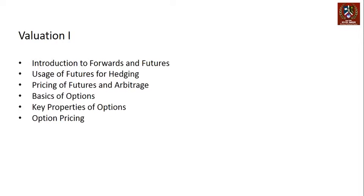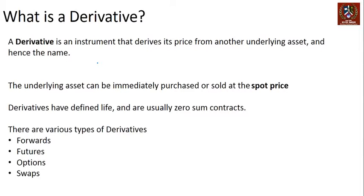We begin with forwards. But just before we go there, let's understand what a derivative is. A derivative is essentially, as the name suggests, an instrument that derives its price from another underlying instrument or asset. If there is an asset whose price is moving — like a stock — a derivative is something that derives its price from that stock price.